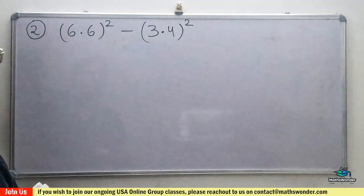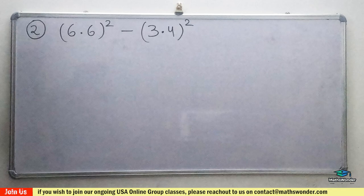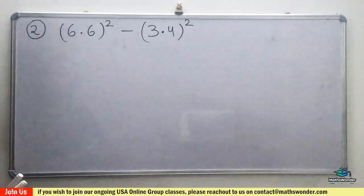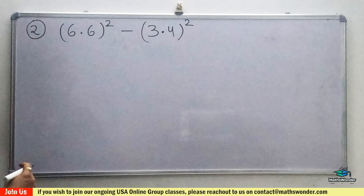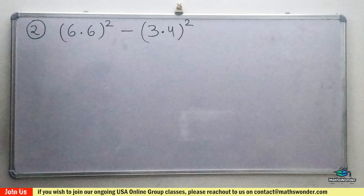So the second question is (6.6)² - (3.4)². Now again you will observe here we can use the identity. The normal method also works and will give the same answer, but once we learn the identity, you have to use identity only.